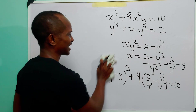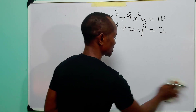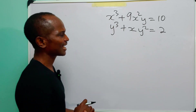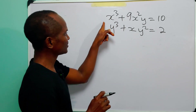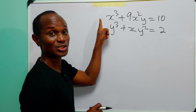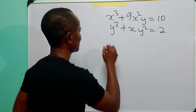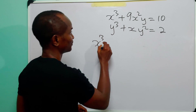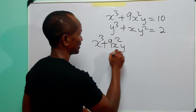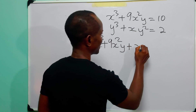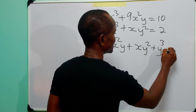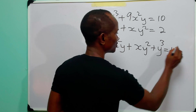But then I looked at the system of equations again critically and found something. If we add equation 1 to equation 2, what we get is x cubed plus 9x squared·y plus xy squared plus y cubed, which is equal to 12.